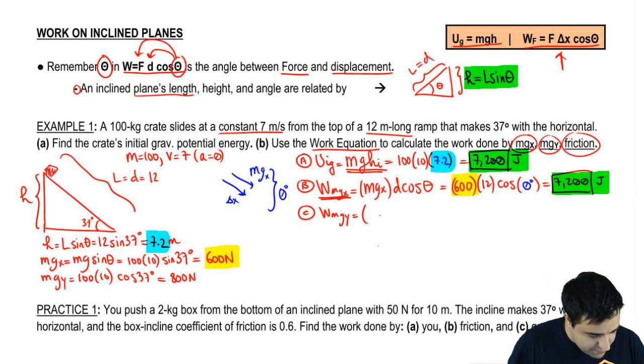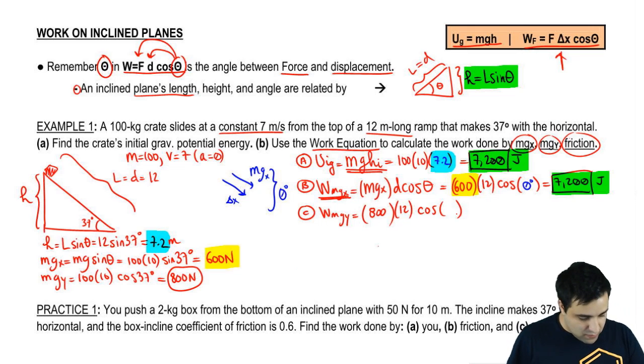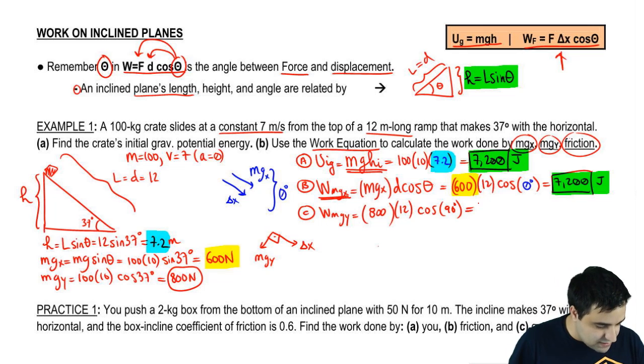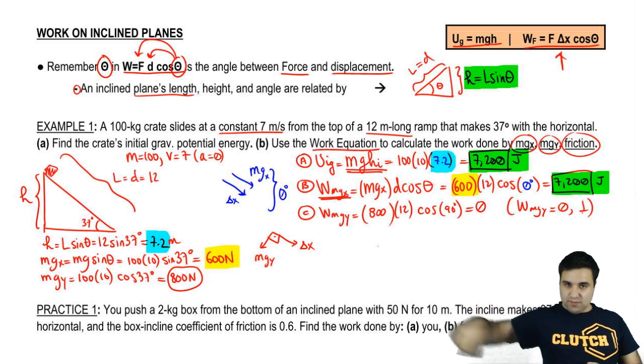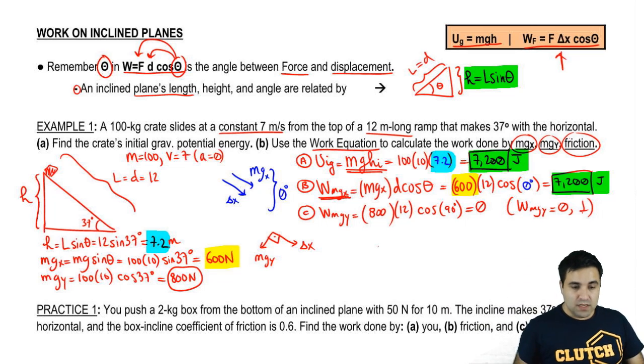What about the work done by MGY? So MGY is 800. The distance is 12. Cosine of what? Well, you're moving this way, delta X. MGY is always into the plane. So this makes an angle of 90, which means this is zero. And you might remember the work done by MGY is always zero because it's always perpendicular to the plane. It's always into the plane. Same thing as the work done by normal. So it shouldn't be a surprise that we got a zero here.